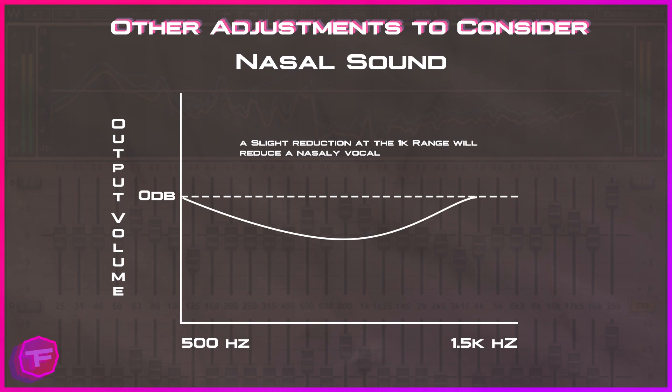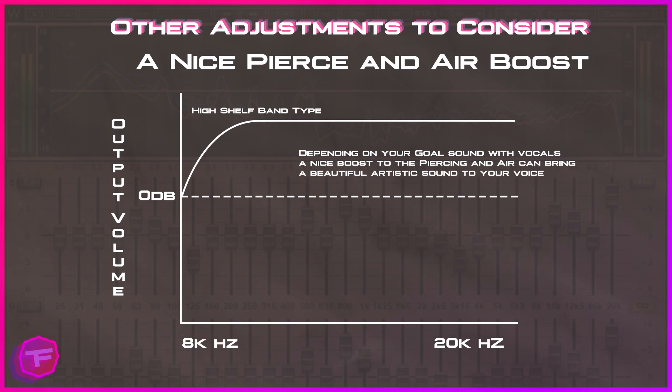Some additional adjustments to consider: for a nasally sound, a slight reduction at the 1k range will reduce a nasally vocal. Use a fairly wide band but do not over-reduce — just bring it down a few decibels. For a nice pierce and air boost, use a high shelf band type and boost from the 8k range upward — it will bring a really artistic, bright sound to your vocal. This is also set up in the Equalizer APO preset file.